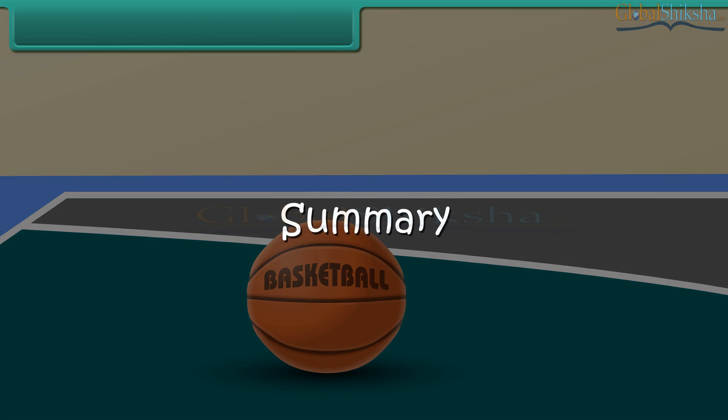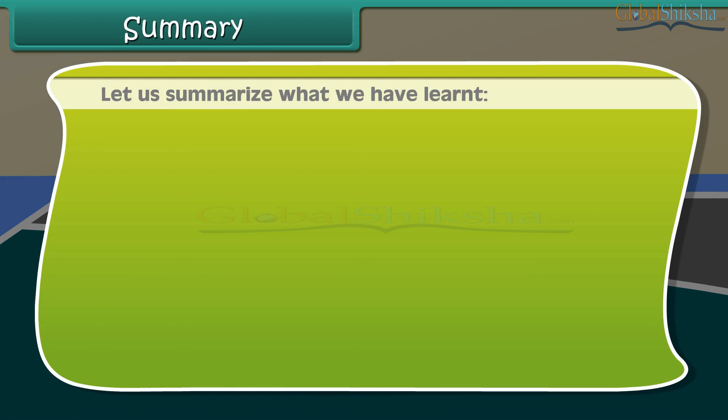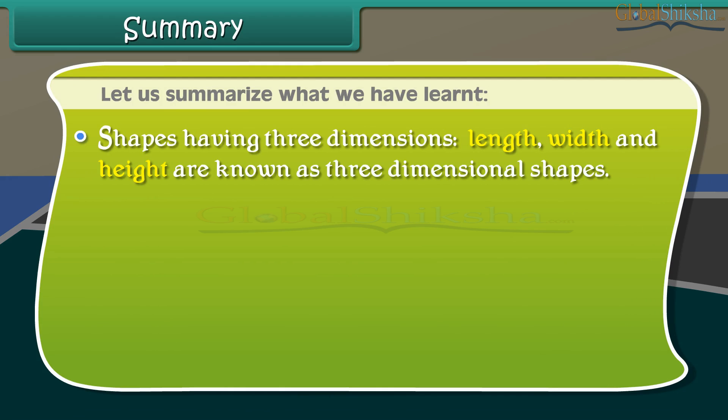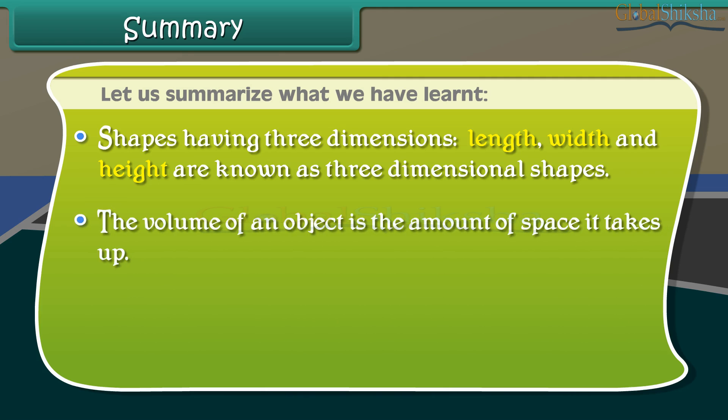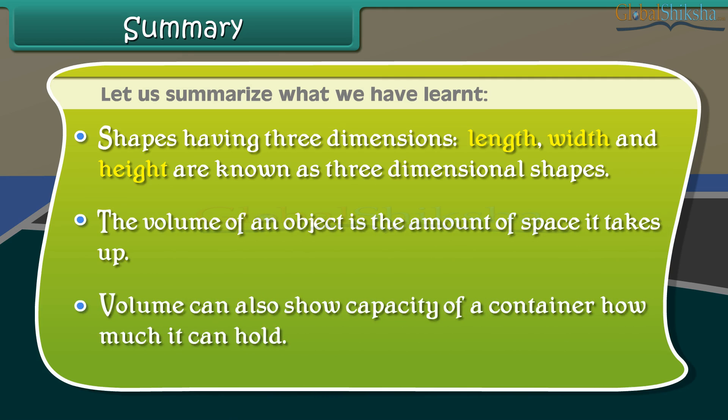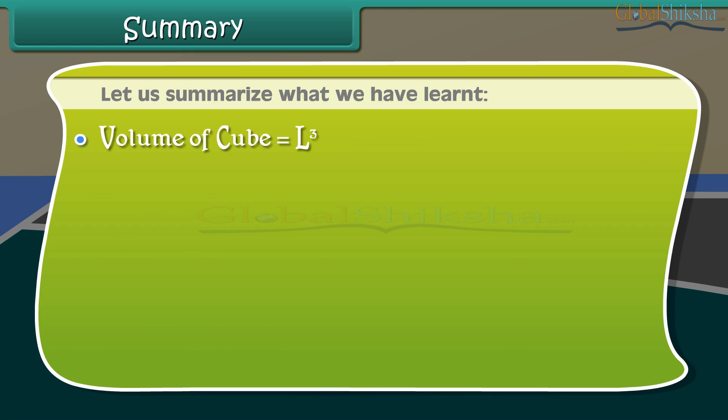Summary. Let us summarize what we have learned. Shapes having three dimensions: length, width and height are known as three-dimensional shapes. The volume of an object is the amount of space it takes up. Volume can also show capacity of a container, how much it can hold.